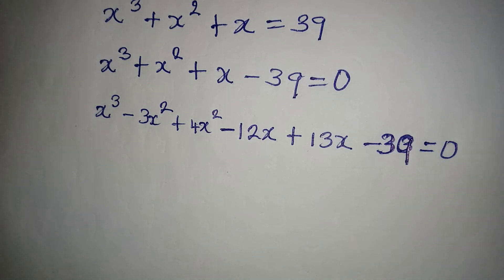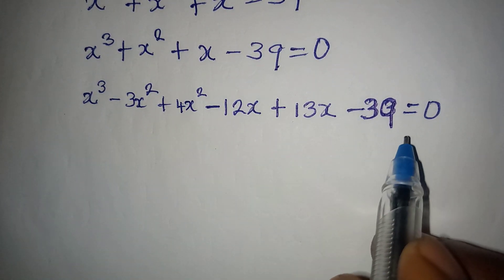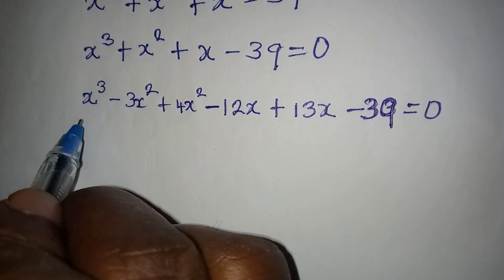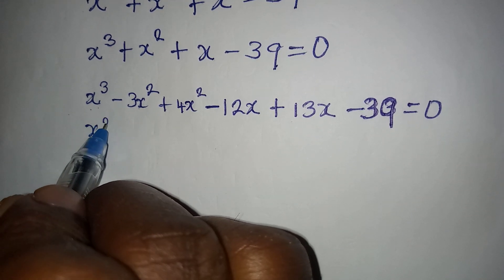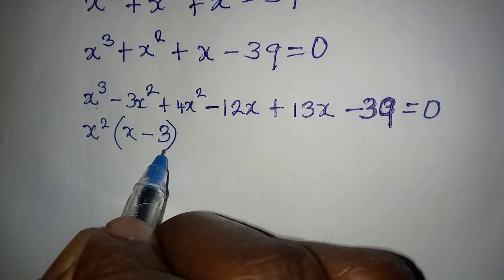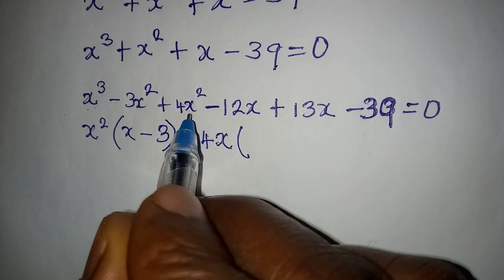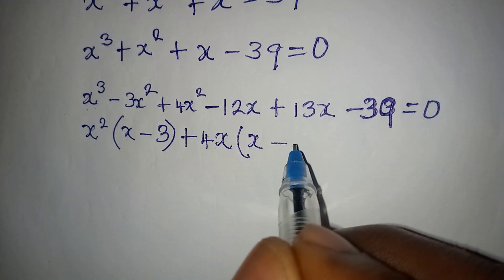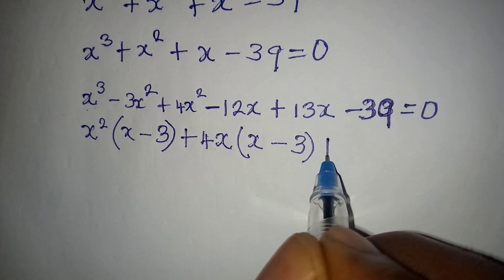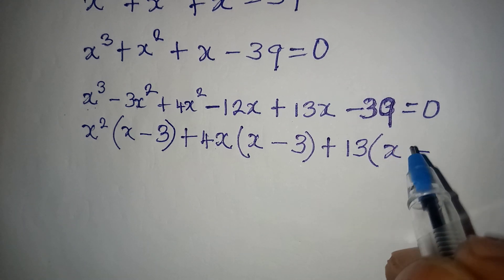Now I begin to factorize. The common factor from the first two terms is x², giving x²(x - 3). Then 4x is the common factor from the next two terms, giving 4x(x - 3). Then 13 is common from the last two terms, giving 13(x - 3). This equals zero.